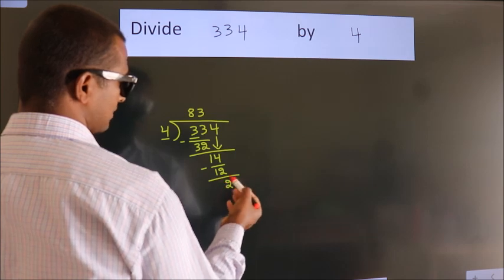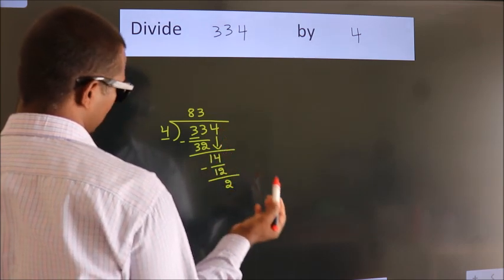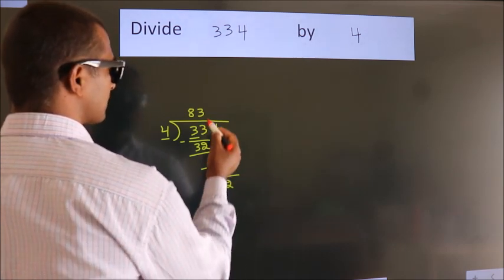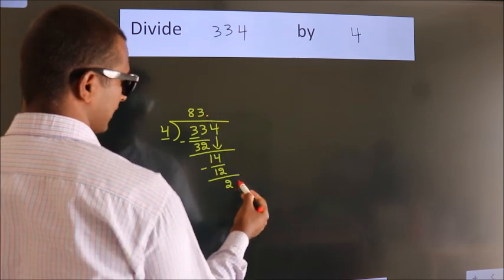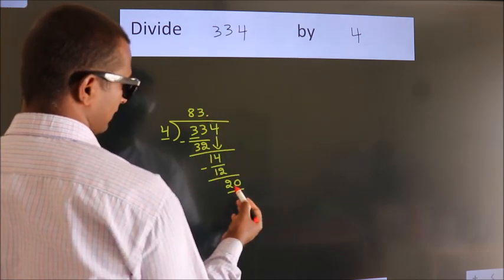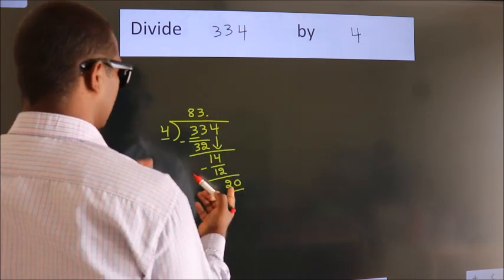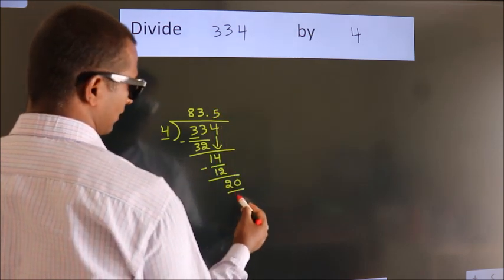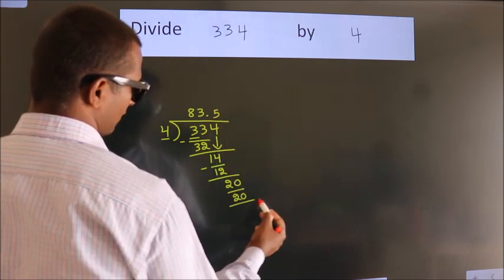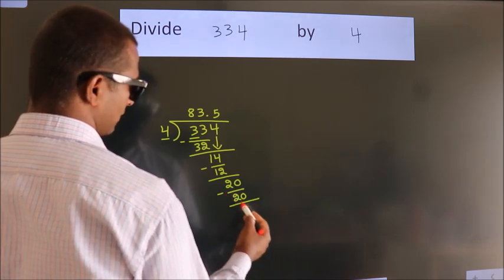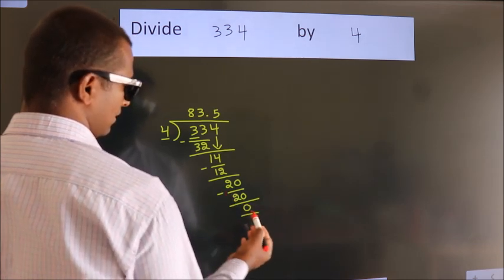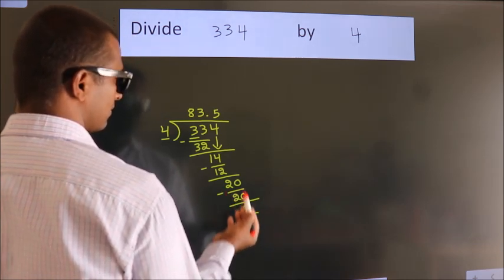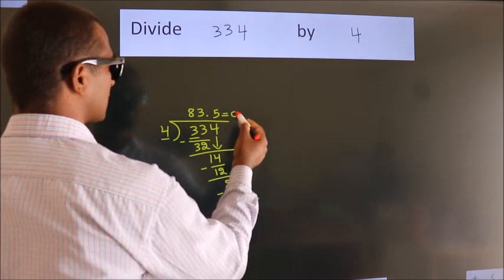After this, no more numbers to bring down. So, what we do is, we put dot, take 0. So, 20. When do we get 20? In the 4 table: 4 × 5 = 20. Now, we subtract. We get 0. We got remainder 0. So, this is our quotient.